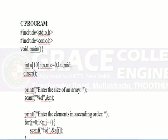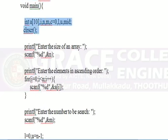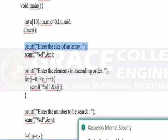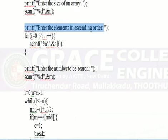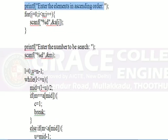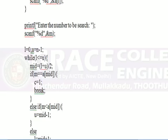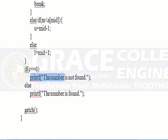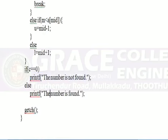Let us see the program. First, we include the header files. Main function — declare the variables. Print: Enter the size of the array — we want to know the size of the array. Enter the elements in ascending order. A for loop is used here. Enter the number to be searched — which element you want to search, we enter that element. If the element is found, the output will become: the number is found. Else, the number is not found.